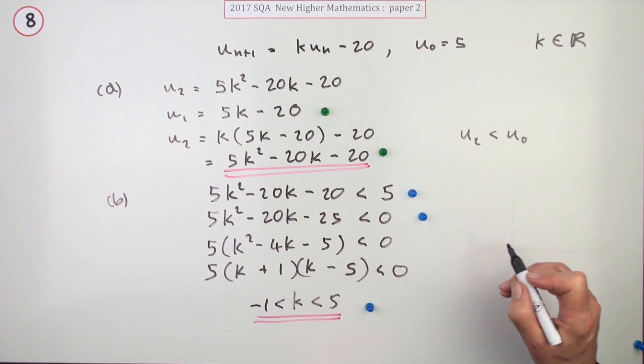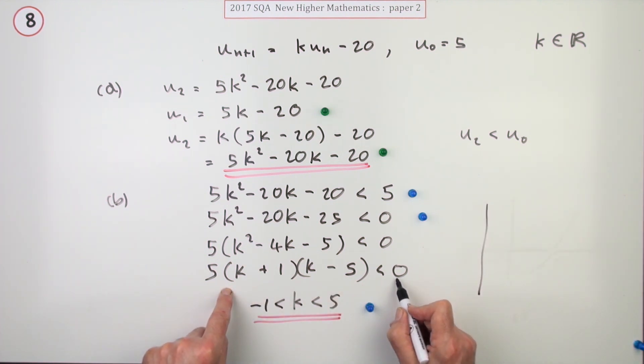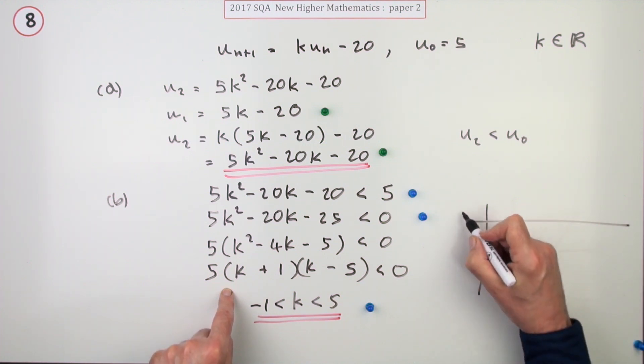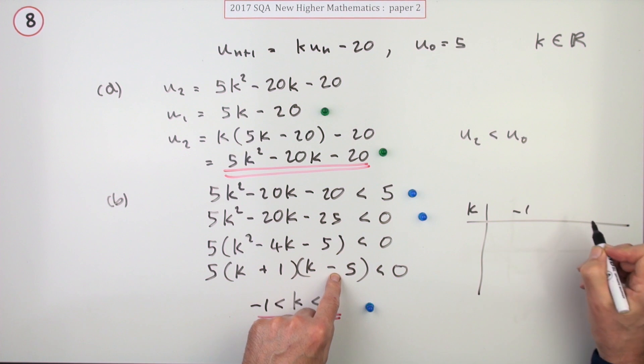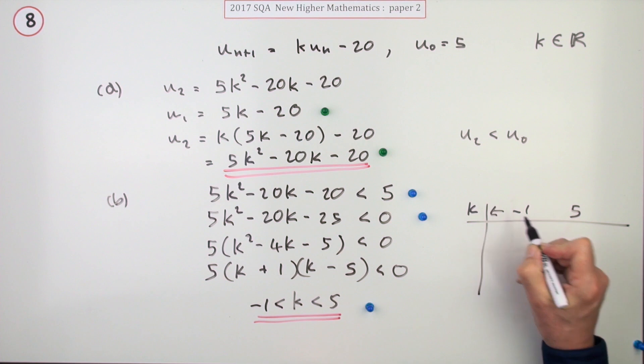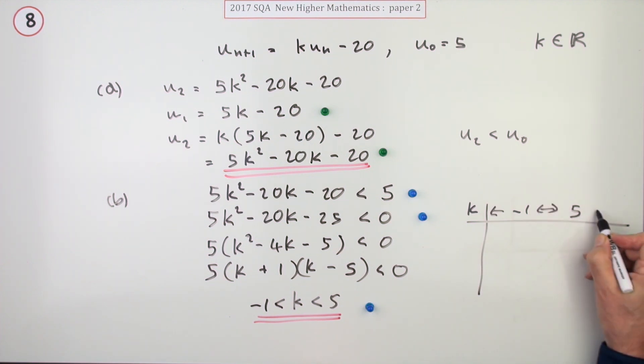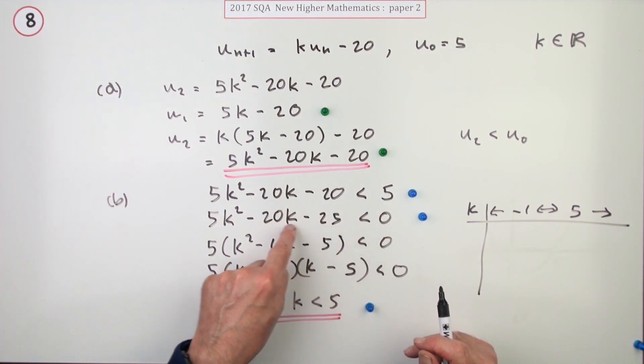There is another way which is to use a table of signs. How can you evaluate this to find when it's less than 0? Well, critical values again are negative 1 and 5. There you are, identifying them gets that mark. Then you just have to consider what happens before that, what happens between, and what happens after.